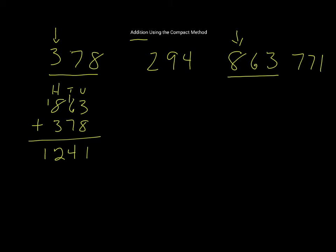Another way of doing it is if we take 863 and we add 378. It's not the compact method, but you might be able to see how the carrying works.